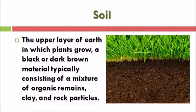Our first topic is soil. Soil is the upper layer of the earth in which plants grow — a black or dark brown material typically consisting of a mixture of organic remains, clay, and rock particles. Soil is the earth's surface material in which clay and rock particles are built up and organic matter is present, which is very important for plants.